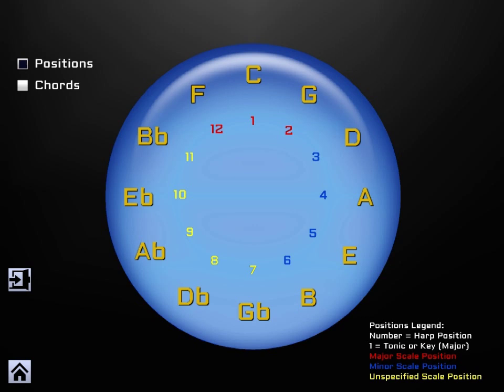A circle of fifths is a visual representation of the relationships among twelve tones of the chromatic scale. One, two, three, four, five, back to twelve sharps and flats. In this case, we're not too worried about that, the number of sharps and flats, but we're just interested in the relationships between keys and positions of harmonica.